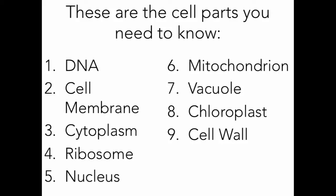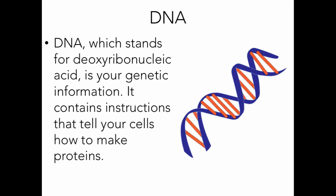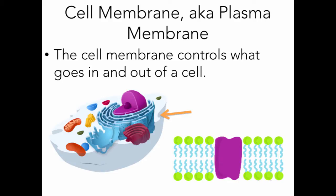There are nine cell parts you need to know for our class: DNA, the cell membrane, cytoplasm, ribosomes, the nucleus, mitochondrion, vacuole, chloroplast, and cell wall. Let's break down each independently. DNA stands for deoxyribonucleic acid — for now you don't need to remember what each letter stands for. Just know that DNA is your genetic information; it carries your genes and contains instructions that tell your cells how to make proteins. Your DNA is like a master recipe book.